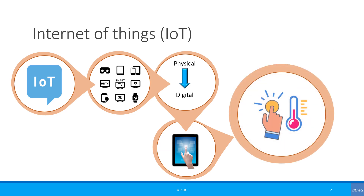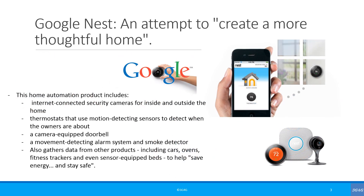An example of this would be connected home appliances that reduce your monthly bills by managing resource usage, automatically turning off electricity when you leave home, or by adjusting the room temperature based on the current climate. One example of this is Google Nest, which aims to create a more thoughtful home.